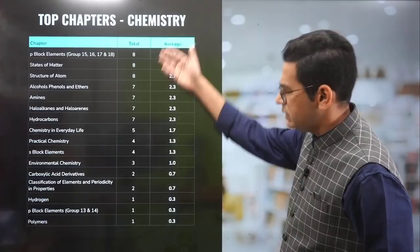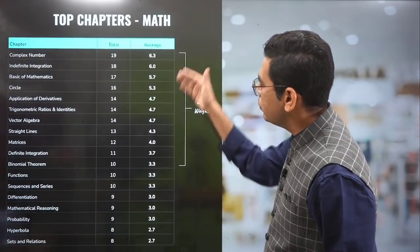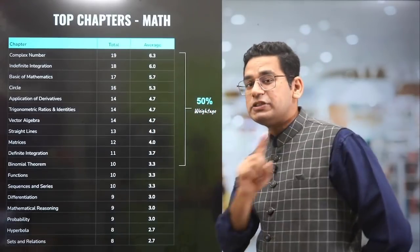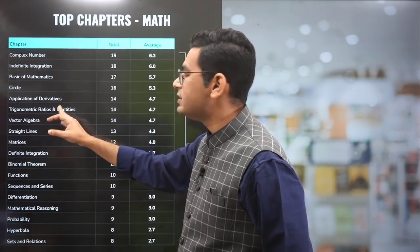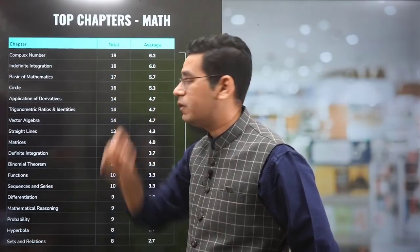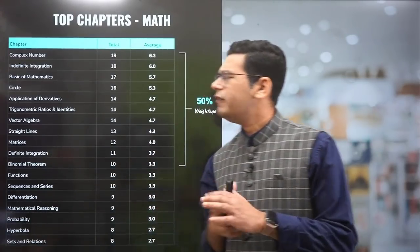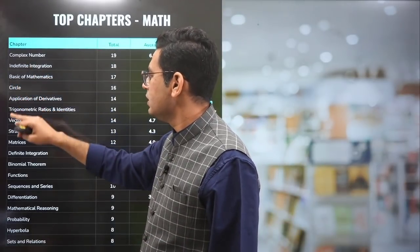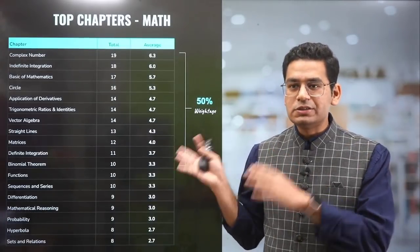For maths, you have to cover more chapters — 11 chapters cover 50% of the weightage. These include: complex numbers, indefinite integration, basics of mathematics (inequalities, logarithms), circle, application of derivatives, trigonometry, vector algebra, straight line, matrices, definite integration, and binomial theorem. Trigonometry comes in very high here. Some anomalies compared to JEE Mains: indefinite integration, basics of mathematics, circle, and trigonometry have higher weightage in COMEDK.